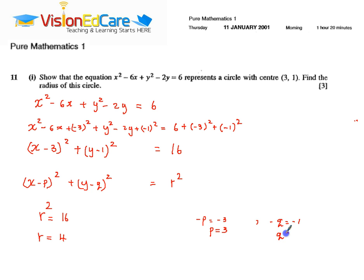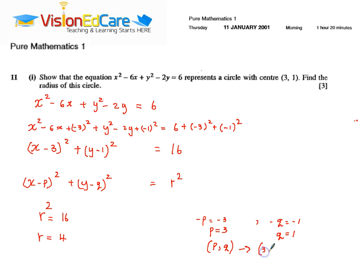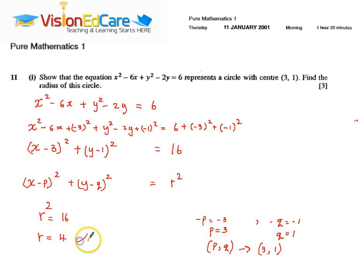Therefore q equals 1. The coordinate of the center of the circle is given as (p, q), which implies that the center of the circle is (3, 1). The radius is 4. So the question is answered — the radius of the circle is 4 and the center is (3, 1), as required.